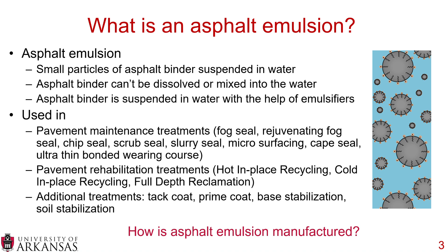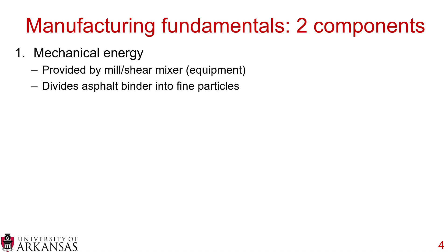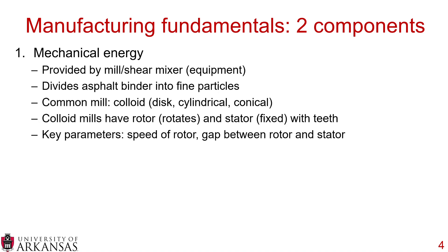So how do we make asphalt emulsion? There are two fundamental parts to manufacturing asphalt emulsion, either at a plant scale or in the lab. First, you need mechanical energy, provided by a piece of equipment — either a mill or a high-speed shear mixer — which divides the asphalt binder into fine particles. Common types of mills are colloid mills, which can be disc, cylindrical, or conical. Colloid mills have a rotor, which rotates, and a stator, which is fixed, with some sort of texture or teeth. Key parameters are the speed of the rotor and the gap between the rotor and stator, and this all impacts the quality of asphalt emulsion.